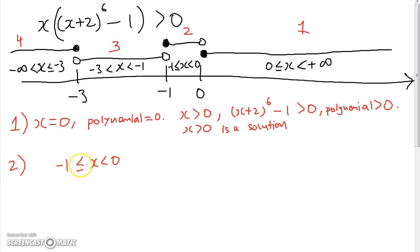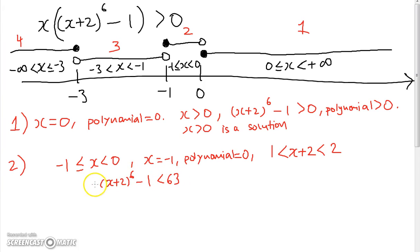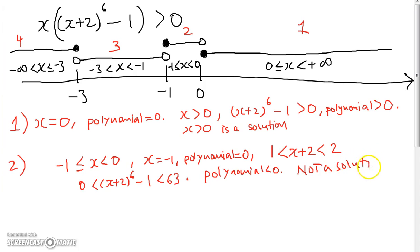Now let's check piece 2, where -1 ≤ x < 0. When x = -1 the polynomial equals 0 since that's a root. For -1 < x < 0, x + 2 is between 1 and 2, so (x + 2)^6 minus 1 is positive and between 0 and 63. However, x is negative, so the polynomial is negative. Piece 2 is not a solution.